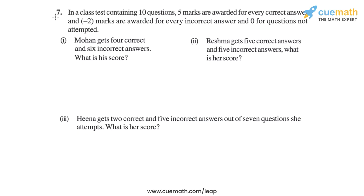The problem statement in question 7 says: in a class test containing 10 questions, 5 marks are awarded for every correct answer, minus 2 marks are awarded for every incorrect answer, and 0 for questions not attempted. We have to solve 3 parts given. Let's go through each of them one by one.